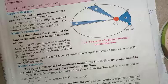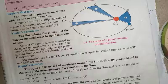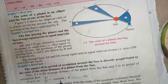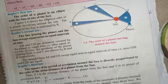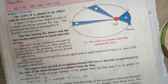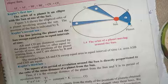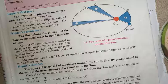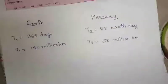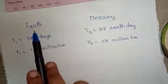...is directly proportional to r³, or T² by r³ is equal to a constant. This is what Kepler said. Now let's take the example of Earth and Mercury to understand this. Here I have taken two examples: Earth and Mercury.